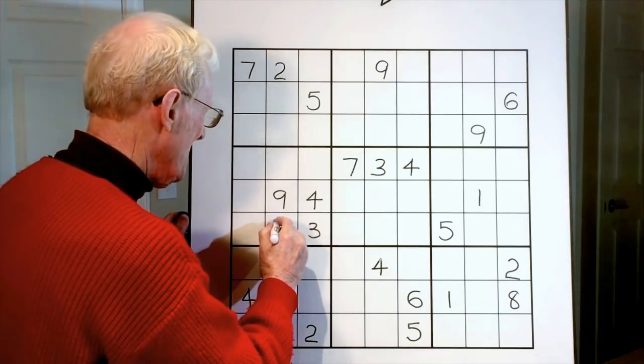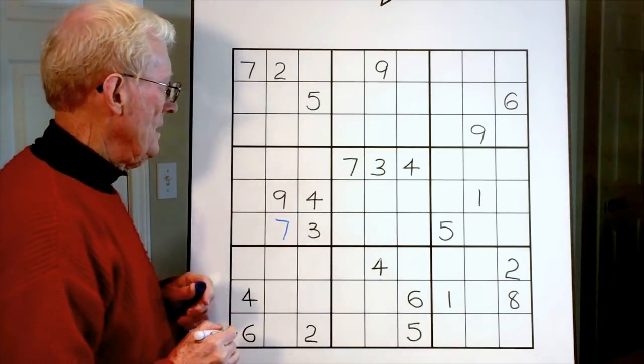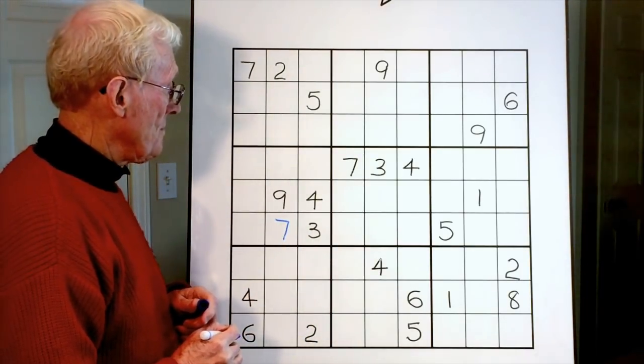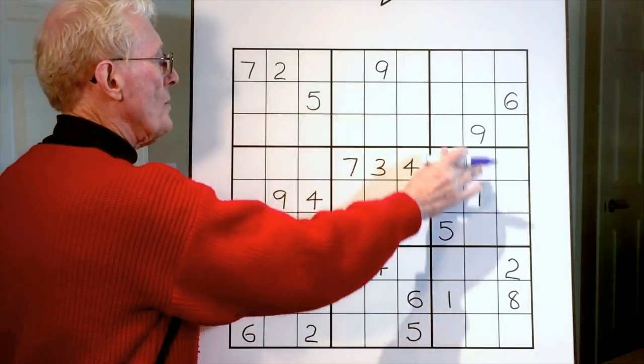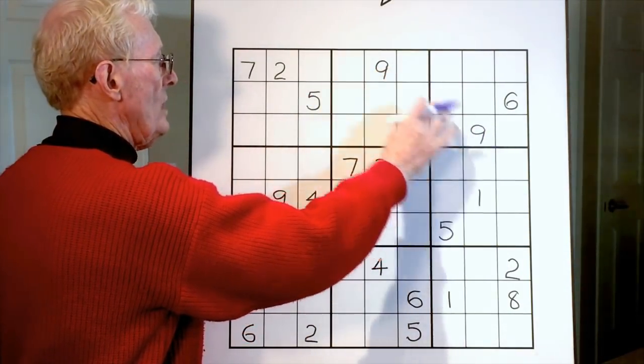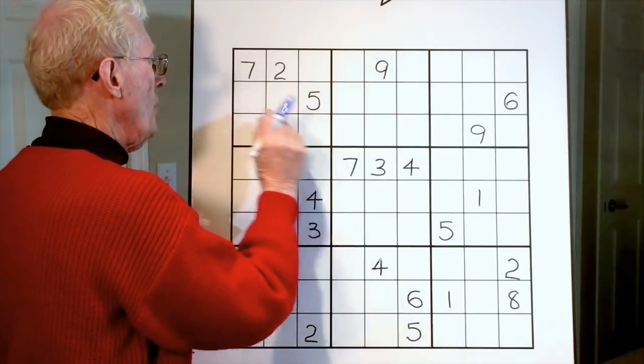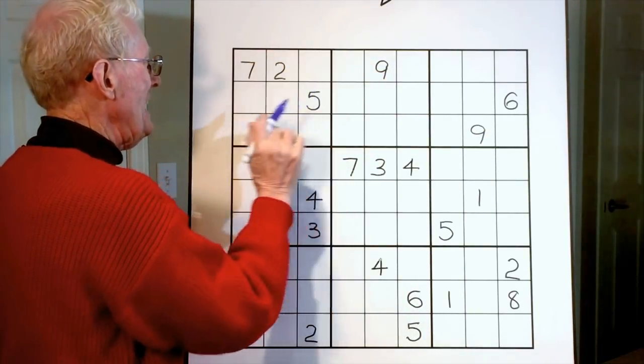Now let's go back to where we were. Here we were doing bottom top, and two nines. There's two nines, so therefore the nine in this block has to be there or there. But there's a nine down here, so we can put a nine right there.